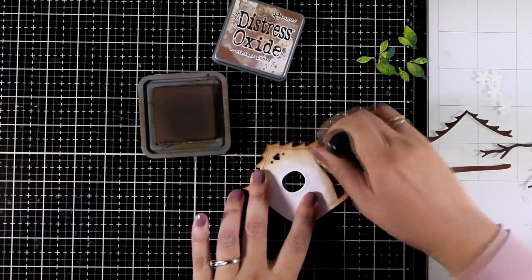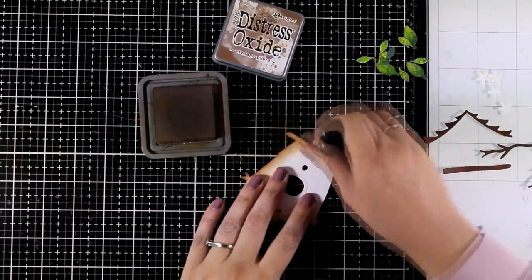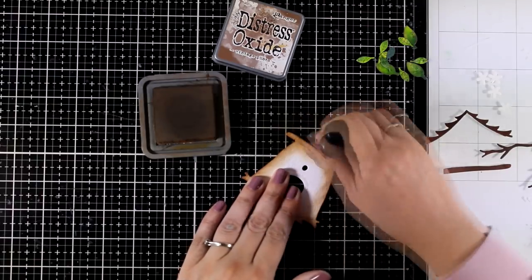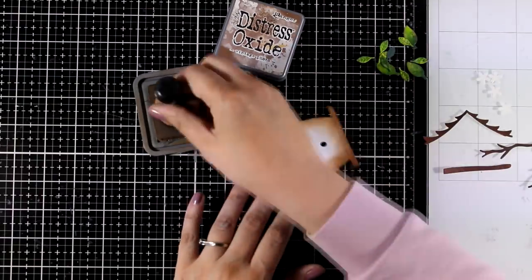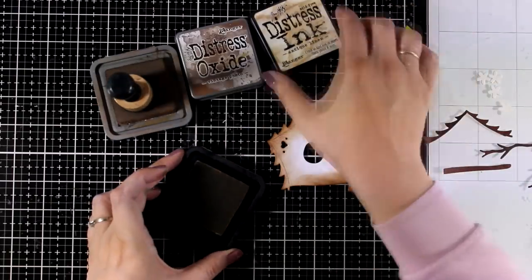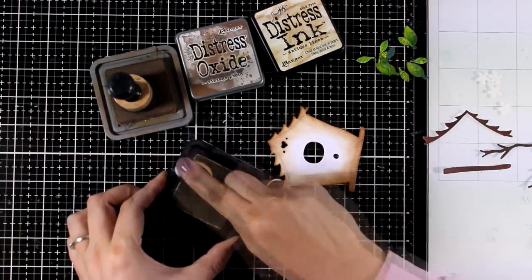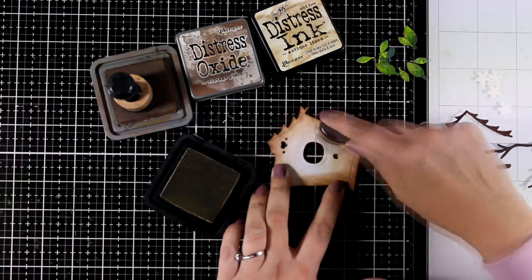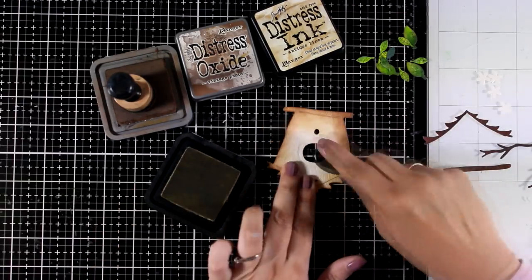I'm going to ink up the birdhouse mainly with brown, having darker brown at the edges and lighter one at the center. I actually went with antique linen at the center and vintage photo on the edges, but you can have your birdhouse any color that you want.